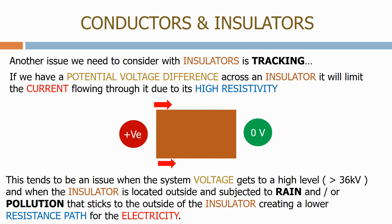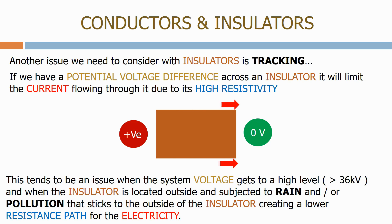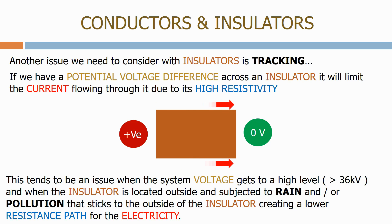This tends to be an issue when the system voltage gets to a high level, above 36 kV, and when the insulator is located outside and subjected to rain and/or pollution that sticks to the outside of the insulator, creating a lower resistance path for the electricity.